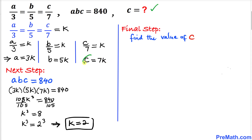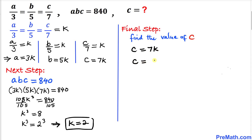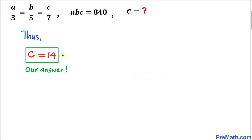Here's our final step. We are going to find the value of c. We know that c equals 7k. We replace k by 2, so c equals 7 times 2, which gives us c equals 14.